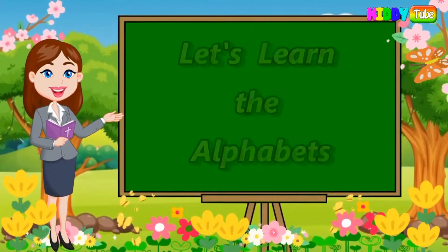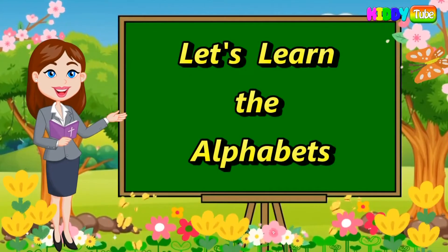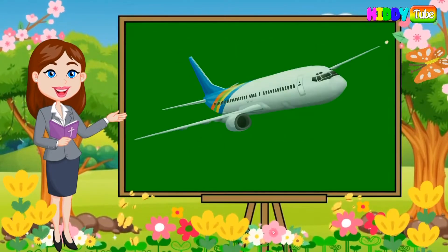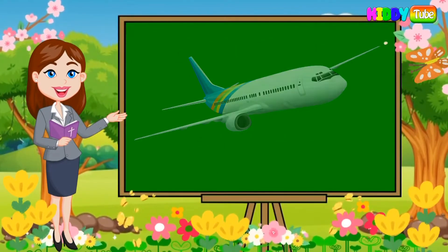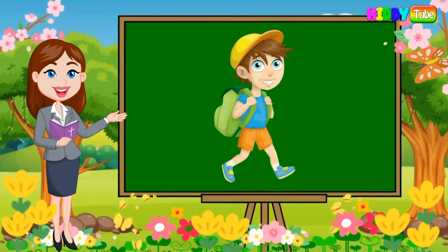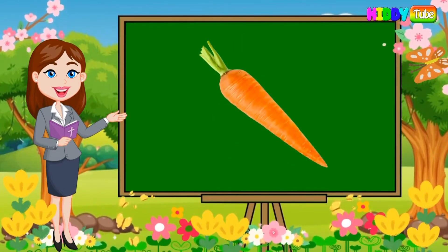Hello kids! Today we will learn the alphabets. A is for aeroplane, B is for boy, C is for carrot.